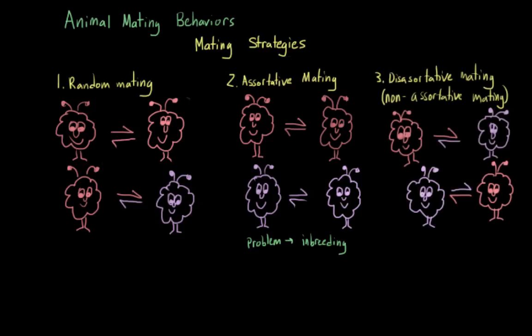Disassortative mating, or non-assortative mating, is the opposite of assortative mating. So with assortative mating, individuals with similar traits were more likely to mate. In contrast, non-assortative mating describes a situation where individuals with different or diverse traits mate at a higher frequency than we would see with random mating.